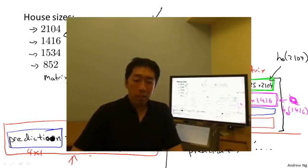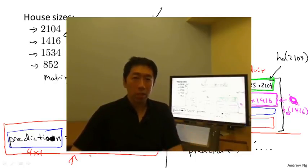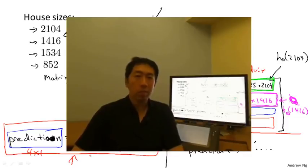So that's it for matrix-vector multiplication. We'll make good use of these operations as we develop linear regression and other models further. In the next video, we're going to generalize this to the case of matrix-matrix multiplication.